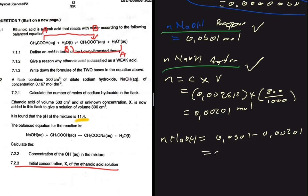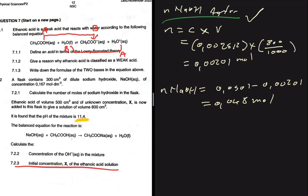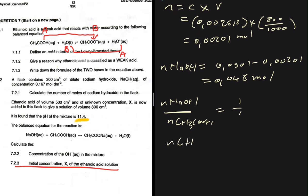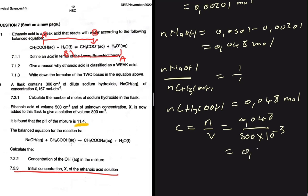Now using the balancing coefficients: moles of NaOH / moles of CH₃COOH = 1/1, so moles of CH₃COOH = 0.048 mol. The concentration equals moles divided by volume: 0.048 ÷ (500/1000) = 0.048 ÷ 0.5 = 0.096 mol/dm³. That is the initial concentration X of the ethanoic acid.